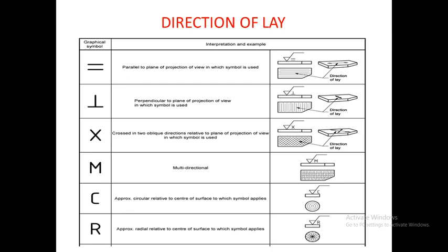Direction of lay refers to the impressions of the cutting tool left on the surface of the workpiece during machining. The different directions of lay are: parallel, perpendicular, angular, multi-directional, circular, and radial. For parallel direction of lay, we use two parallel lines — this indicates the tool moved parallel to the length of the workpiece, leaving impressions parallel to the length. For perpendicular direction of lay, a perpendicular symbol is used, indicating the tool moved perpendicular to the workpiece length.